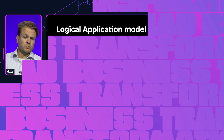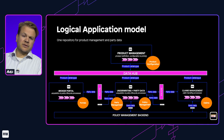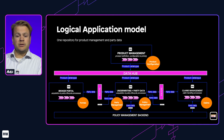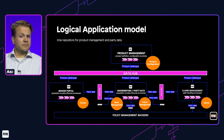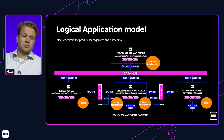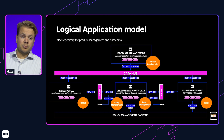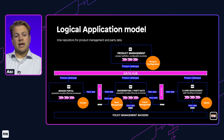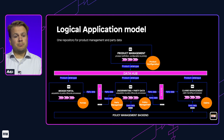In our solution, you can see the logical application model of the project. At the top is the project management application, used to configure policy types, insured object types, and the coverages and insured values that belong to the products. This product catalog is exposed via Data Hub to the other applications: the broker portal, the underwriting and party data application, and the claim management application — so all three applications are using the same product catalog.